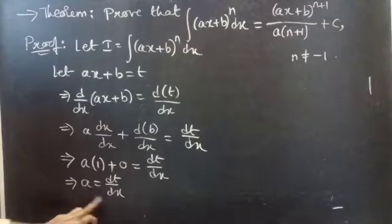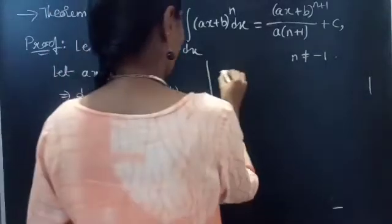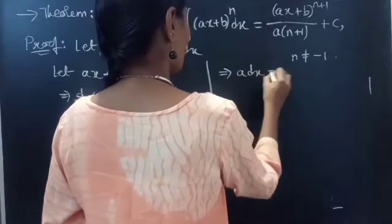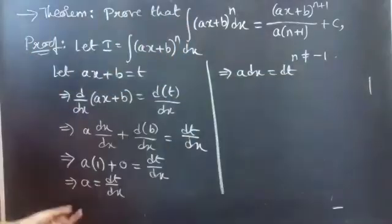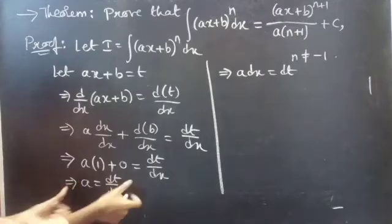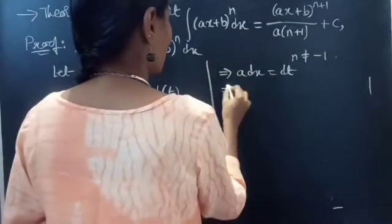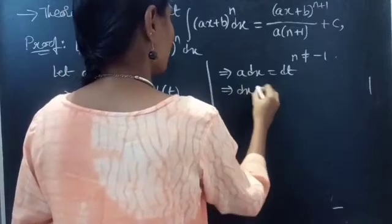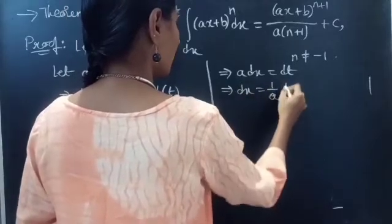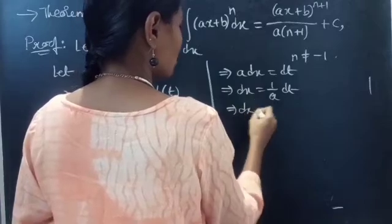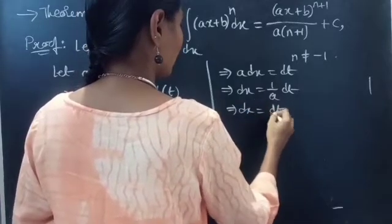Now take dx to the left-hand side. We get A dx equals dt. Taking A to the right-hand side, we get dx equals dt/A.